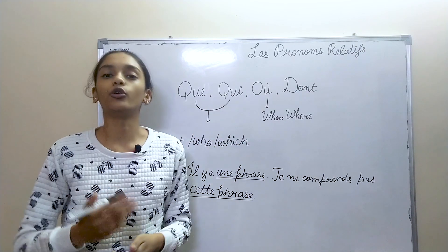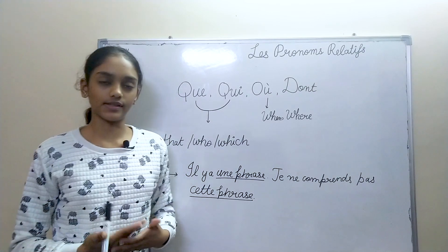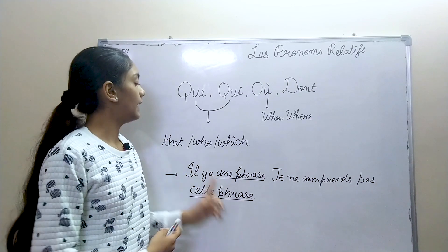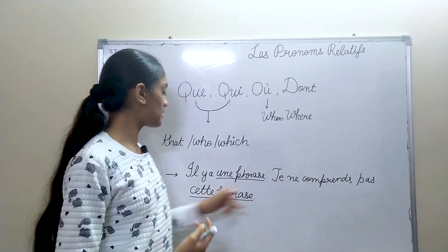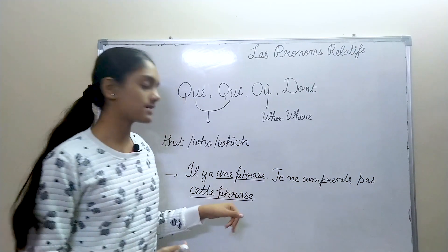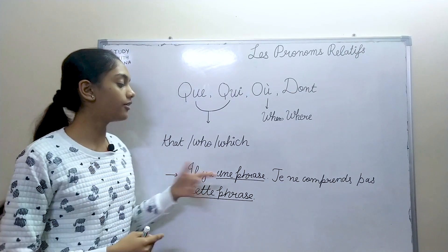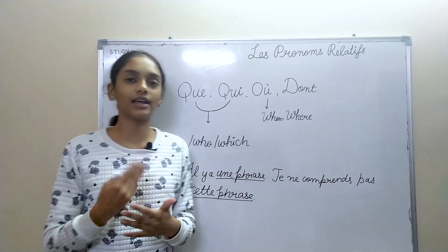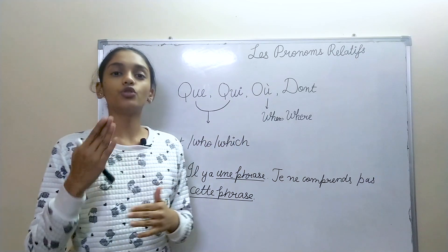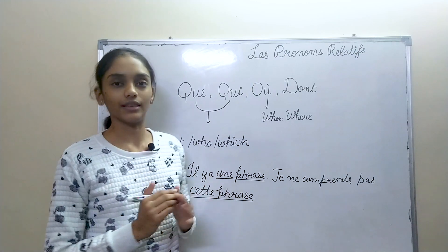Now, why do we use pronoms relatifs? It's to avoid repetition in a sentence. Like, I have a sentence: "Il y a une phrase, je ne comprends pas cette phrase" — "There is a sentence. I do not understand this sentence." Rather than repeating the word 'sentence' again and again, we can use words like qui, que, or où to replace them and avoid repetition. That is what pronom relatif is all about.